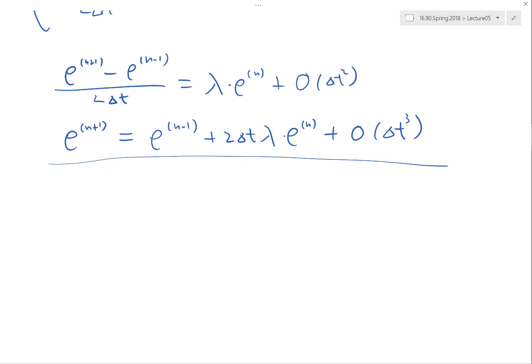Again, that's something we actually did, I think, once before. That is, trying to convert this three-term recursion into a system of one-term recursion, right? By writing down the formula of e to the n plus 1 and e to the n would be equal to. The first one is e to the n minus 1 plus 2 delta t lambda e to the n.